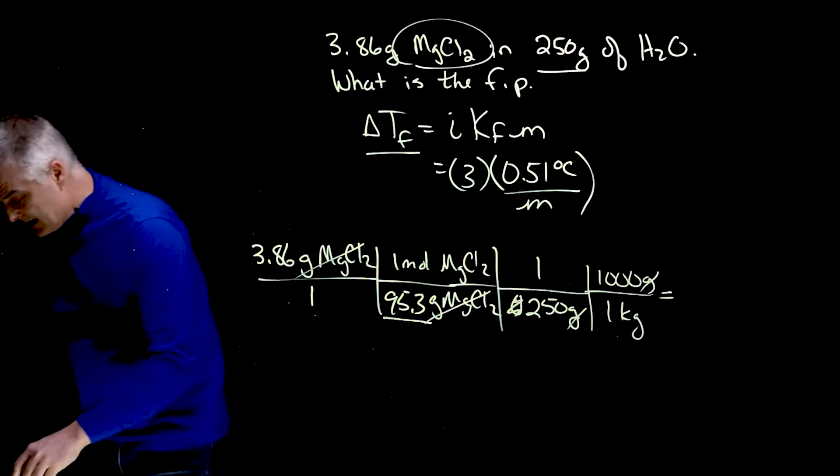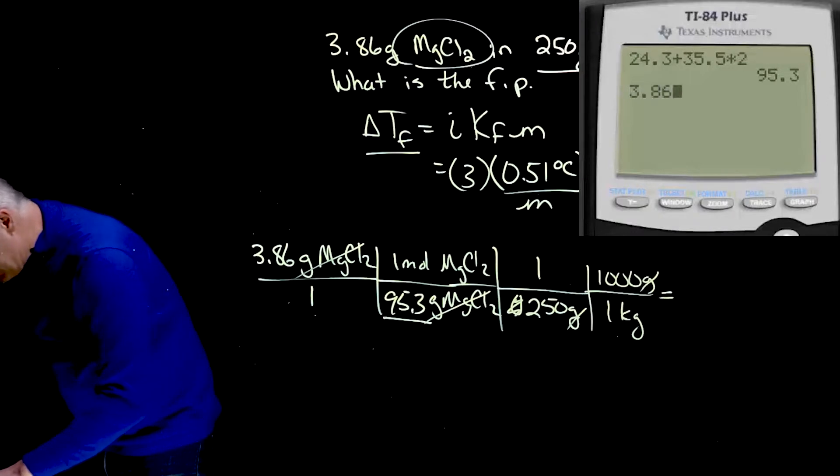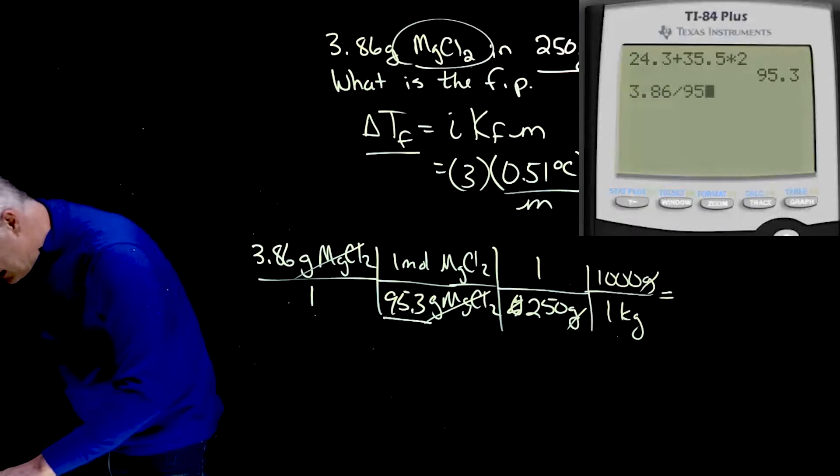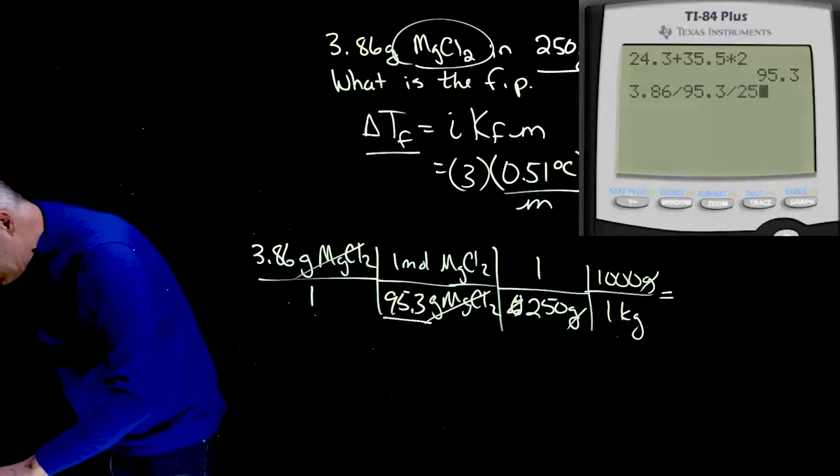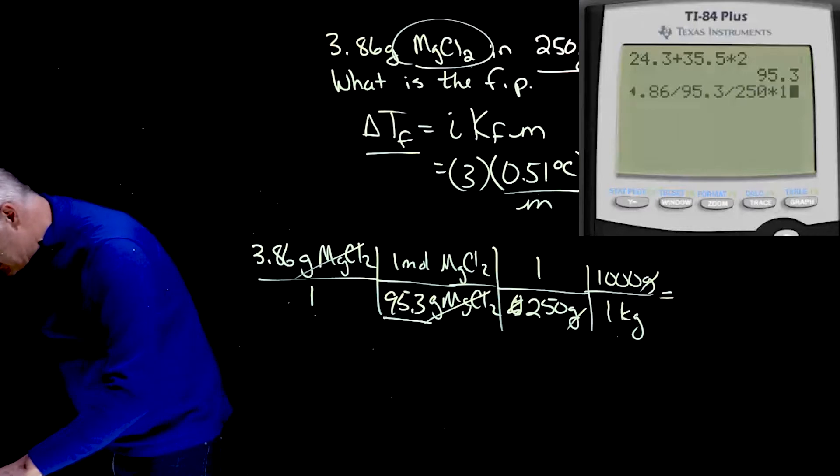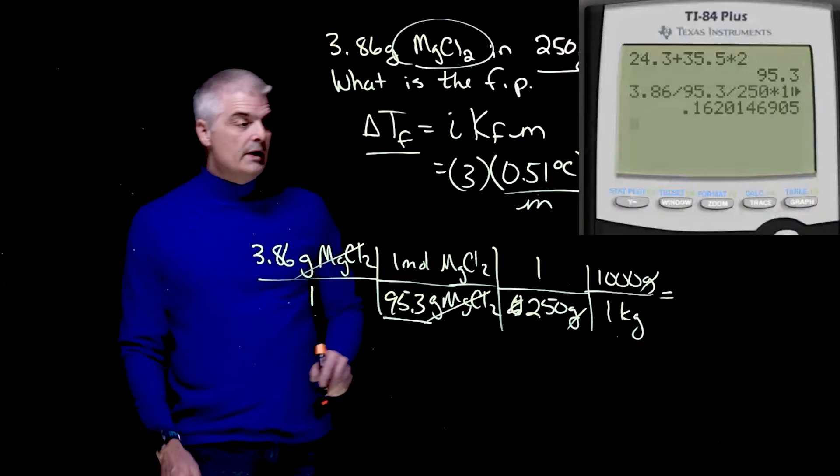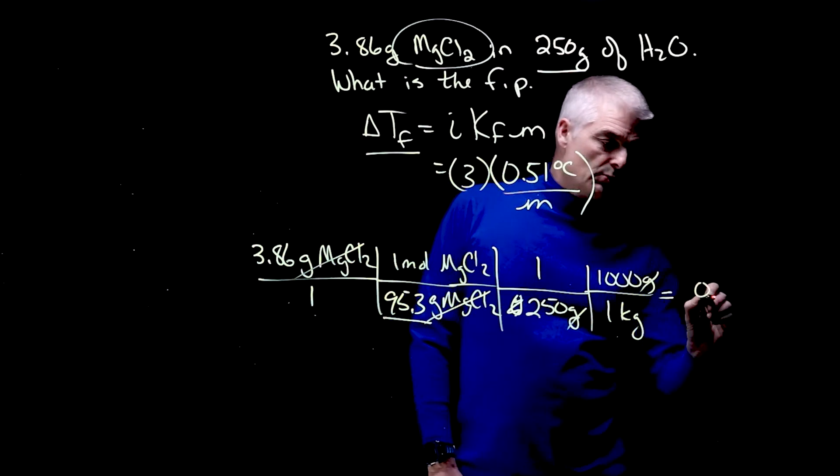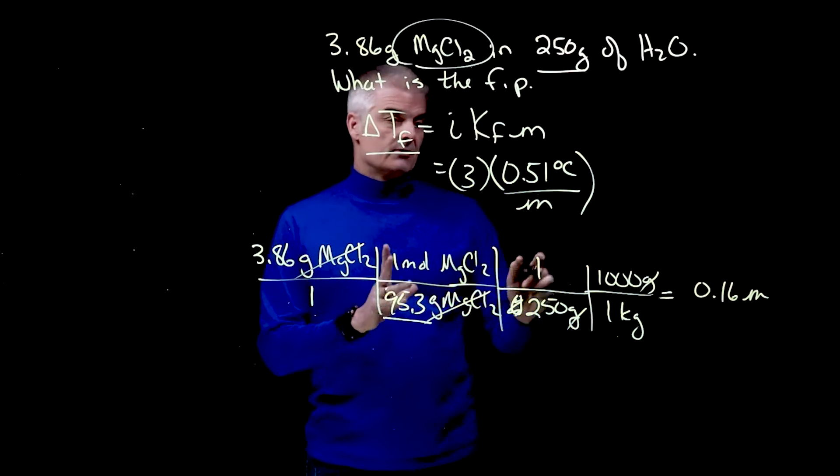And now I'm going to take my calculator and I'm going to take 3.86 divided by 95.3 divided by 250 times 1,000. And I get 0.16, 0.16 molal, or moles per kilogram.